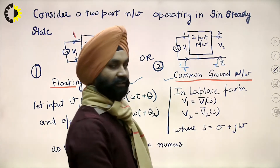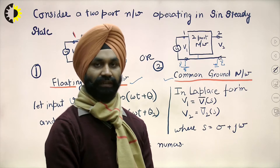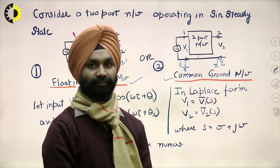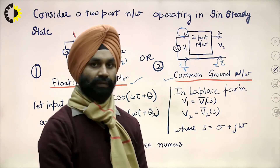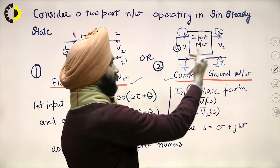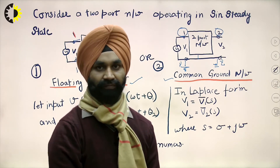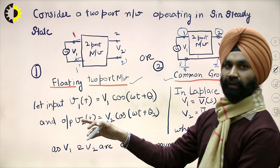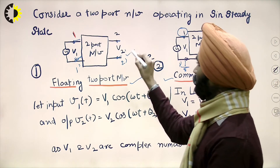Here, terminals 1-dash and 2-dash are grounded, i.e., at the same potential. This is most common in filter design or circuit design — terminal 1 is applied with respect to ground, and terminal 2 is also applied with respect to 2-dash, which is ground. In other words, on both the input and output sides, one terminal is at common ground. Now, for these two networks, if we apply input V1 and take V2 as the output.